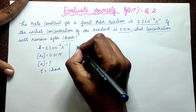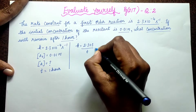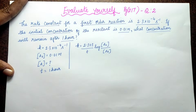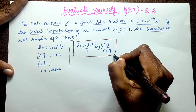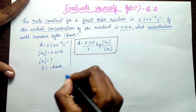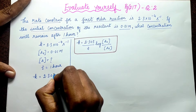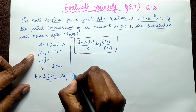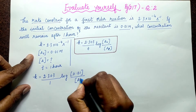The first order reaction formula is: k = 2.303 / T × log([A₀] / [A]). Substituting our values: k = 2.303 / 1 hour × log(0.01 / [A]).